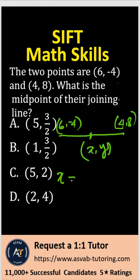the X component will be X1 plus X2 over 2. So you could write this one is X1, Y1, X2, Y2, right? So that gives you 6 plus 4 is 10,